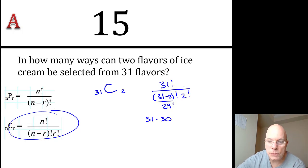31 times 30 times 29 factorial over 29 factorial times 2 times 1, so the 29 factorial in my denominator cancels. I'll expand my 2 factorial to 2 times 1, 29 factorial cancels.